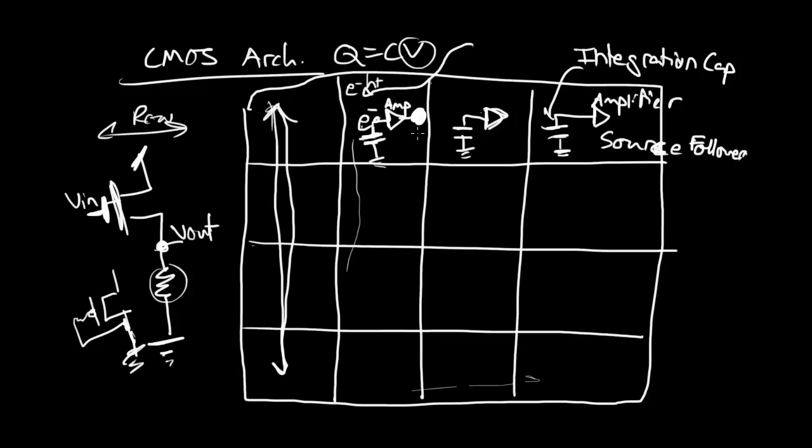And this is where, it's unfortunate this is not a 3D drawing because there are metal lines running that you can't see here. But instead of shuttling charge down, we're just going to read that voltage straight down the column out on a bus. Let me scroll down a little bit.